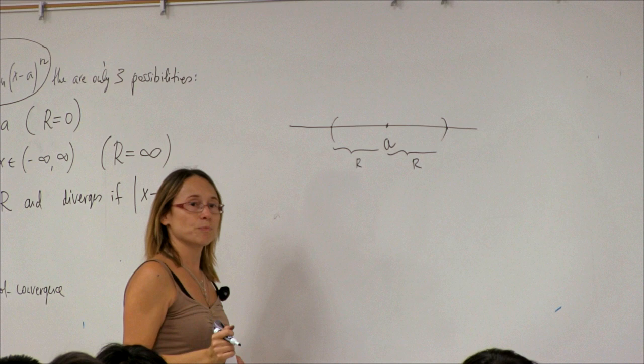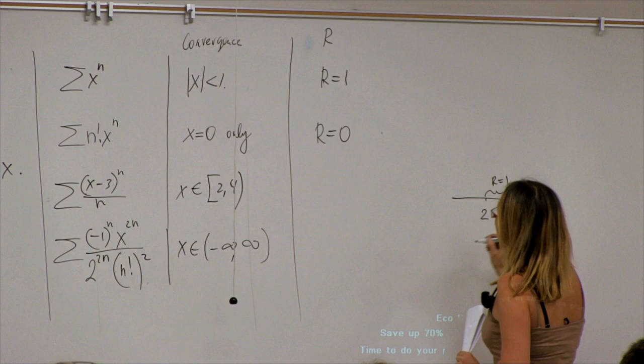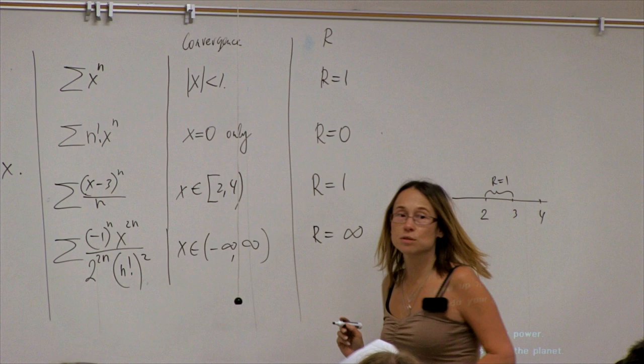A student confirms: for the third example, (x−3)^n/n, the radius of convergence is 1. Absolutely correct — you go from 2 to 4, the center was 3, so r equals 1. And for the last one, the Bessel function, r is infinity.